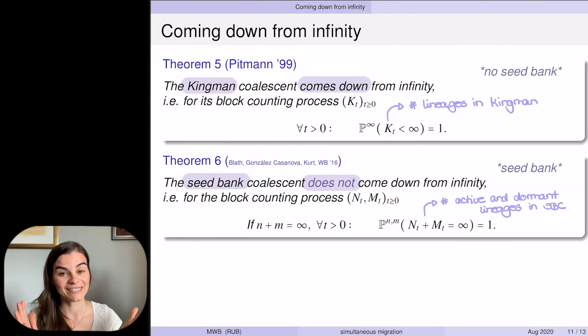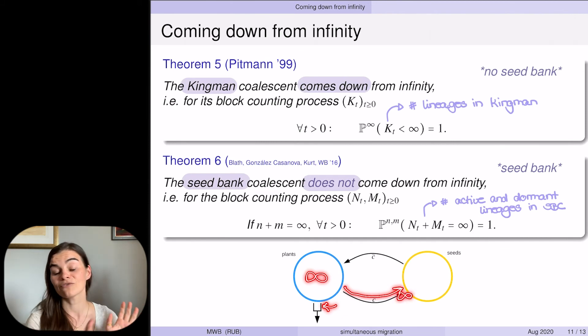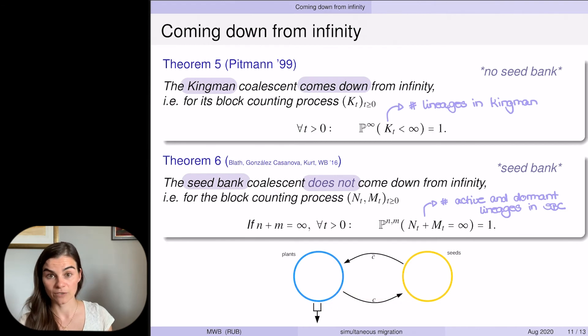The seed bank coalescent—here's where it differs—does not come down from infinity. This is precisely the storage effect of the seed bank, because whether you start with infinitely many active or dormant individuals, you will always have an infinite number of individuals in the seed bank. You see here the plant population and the seed population. Kingman rapidly diminishes the numbers of plants, and you have the migration between the two populations. You can show that if you start with infinitely many seeds, the individual migration is too weak to empty the seed bank. However, if you start with infinitely many plants, Kingman will bring that down to a finite number immediately, but the individual migration mechanism is quick enough to save infinitely many into the seed bank before Kingman has reduced all their numbers.